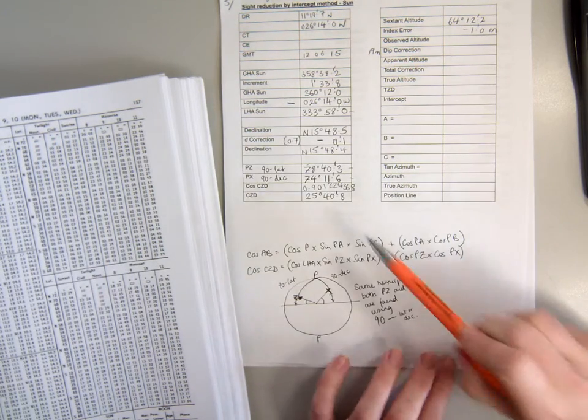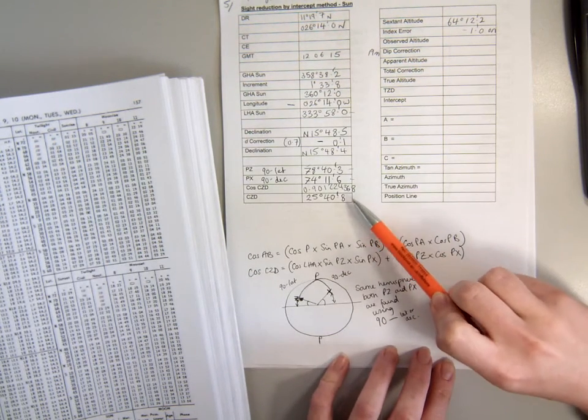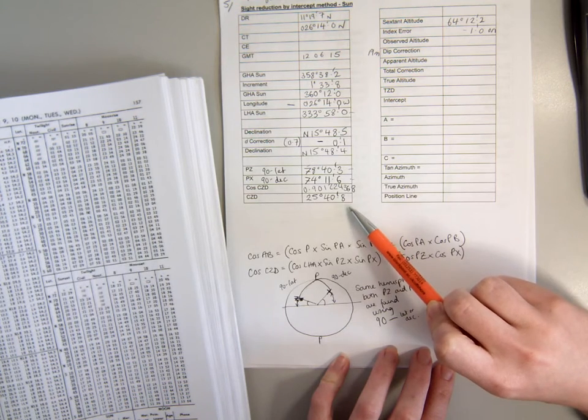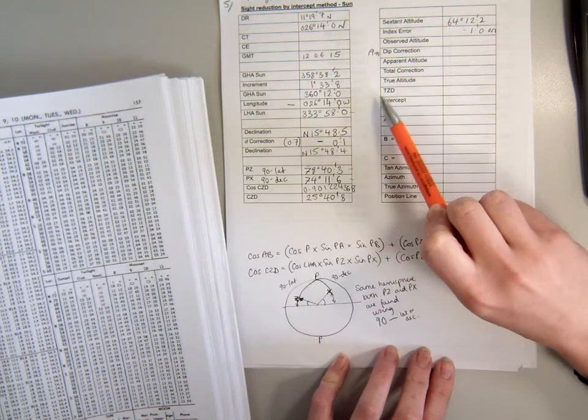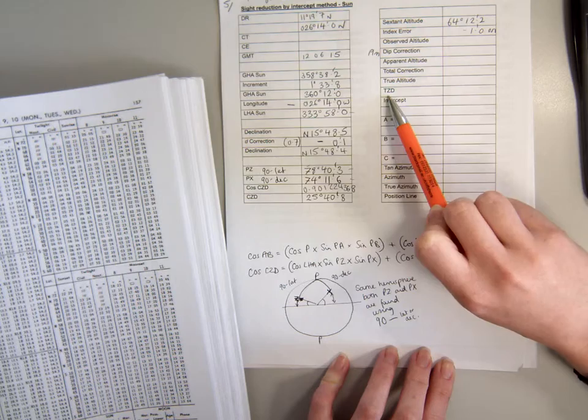What we're really aiming towards here is having a value that we can compare this CZD with to find our intercept. So the value we're going to compare with the CZD is the TZD, and to find the TZD we need to find a true altitude.